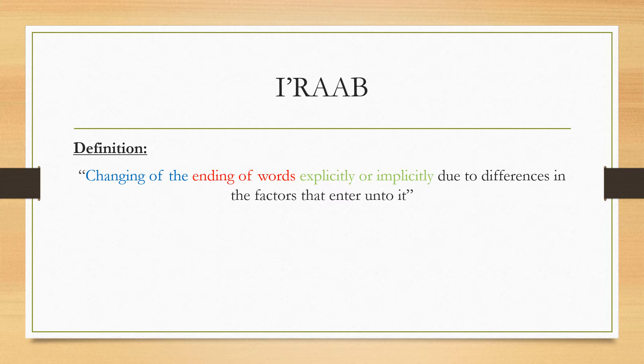This change could either be explicit or implicit. The reason why this change occurs is due to differences in the factors that enter upon said word. So you have a word like زيد — I can put it in three different scenarios and the ending of that word will change: جاء زيدٌ, رأيت زيدًا, مررت بزيدٍ. This change is explicit — you can actually hear it.